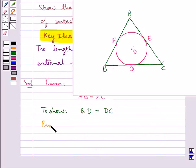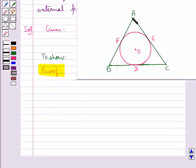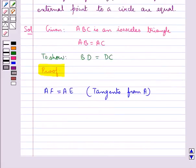Now let's see its proof. As you can see in this figure, AF and AE are the tangents from external point A to the circle. So we have AF equals AE since they are the tangents from point A and we know that the lengths of the tangents drawn from an external point to a circle are equal.